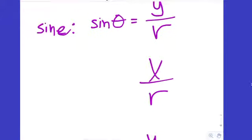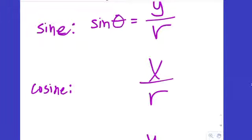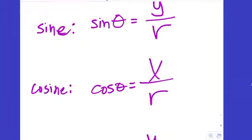For X over R, since we already had sine, they called it cosine — abbreviated C-O-S of theta. The 'co' prefix reflects the complementary relationship, not a reciprocal. And the ratio Y to X — vertical to horizontal — was given the name tangent, abbreviated T-A-N of theta.